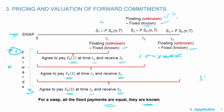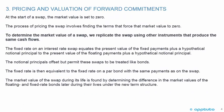What it moves up to in CFA Level 2 is the pricing and valuation over the life of a swap. This slide has a few bullet points regarding swaps: at the start of a swap, the market value is set to zero, same as with a forward. The process of pricing the swap — finding the interest rate for the fixed rate — involves finding the terms that force the market value to zero. To determine the market value of a swap, we replicate the swap using other instruments that produce the same cash flows. The fixed rate on an interest rate swap equates the present value of the fixed payments plus a hypothetical notional principal to the present value of the floating payments plus a hypothetical notional principal. The notional principals offset but permit these swaps to be treated like bonds. The fixed rate is then equivalent to the fixed rate on a par bond with the same payments as on the swap.